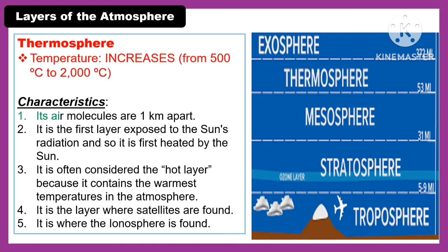The fourth layer of the atmosphere is the thermosphere. The temperature in the thermosphere increases from 500 degrees Celsius to 2,000 degrees Celsius. Characteristics of the thermosphere: its air molecules are 1 kilometer apart; it is the first layer exposed to the sun's radiation, so it is the first heated by the sun; it is often considered the hot layer because it contains the warmest temperatures in the atmosphere; it is the layer where satellites are found; and it is where the ionosphere is found.